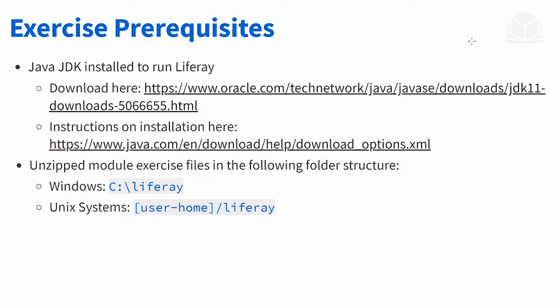Before we get started, you are going to have to download JDK 11 to use with Liferay 7.2. There are two links here — one for download and one for how to install it. We're also going to be using exercises in this course, so you're going to want to copy and unzip those into the corresponding directory, whether you're on Windows or Unix systems, as shown on the slide.